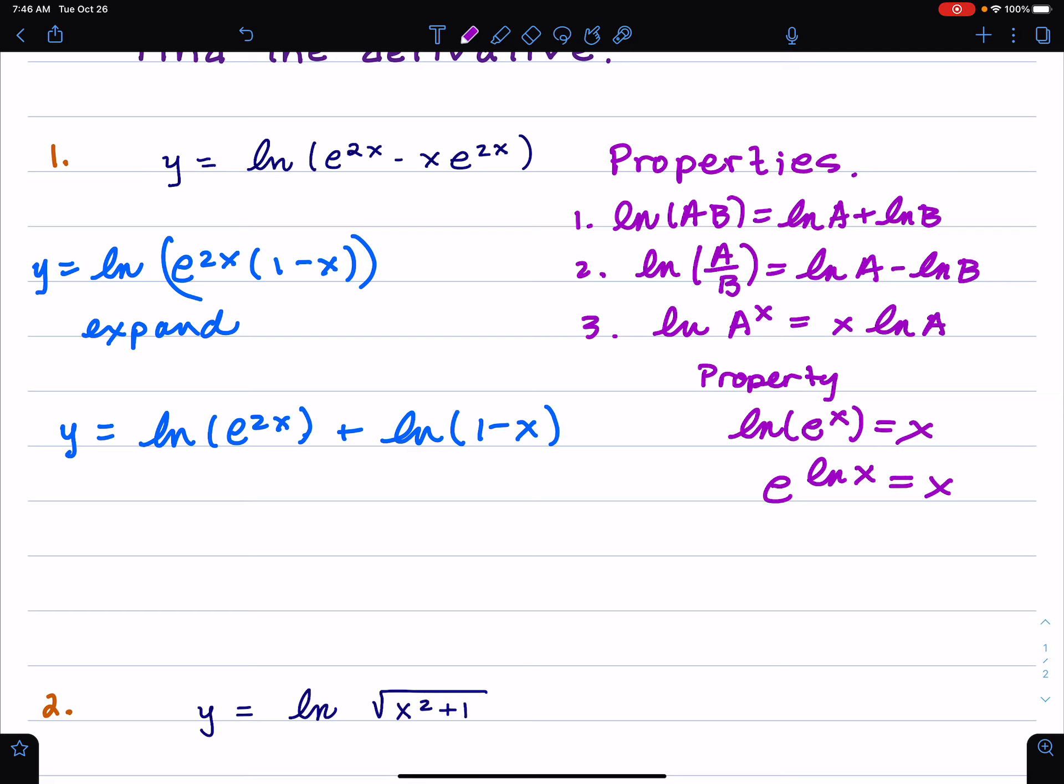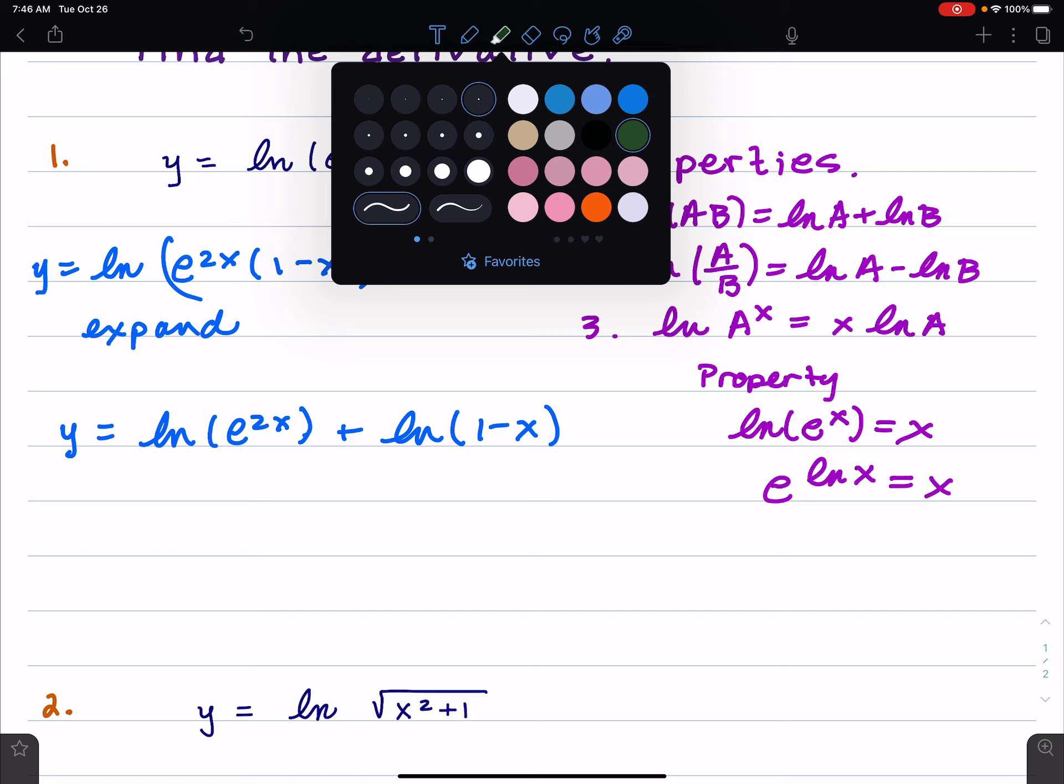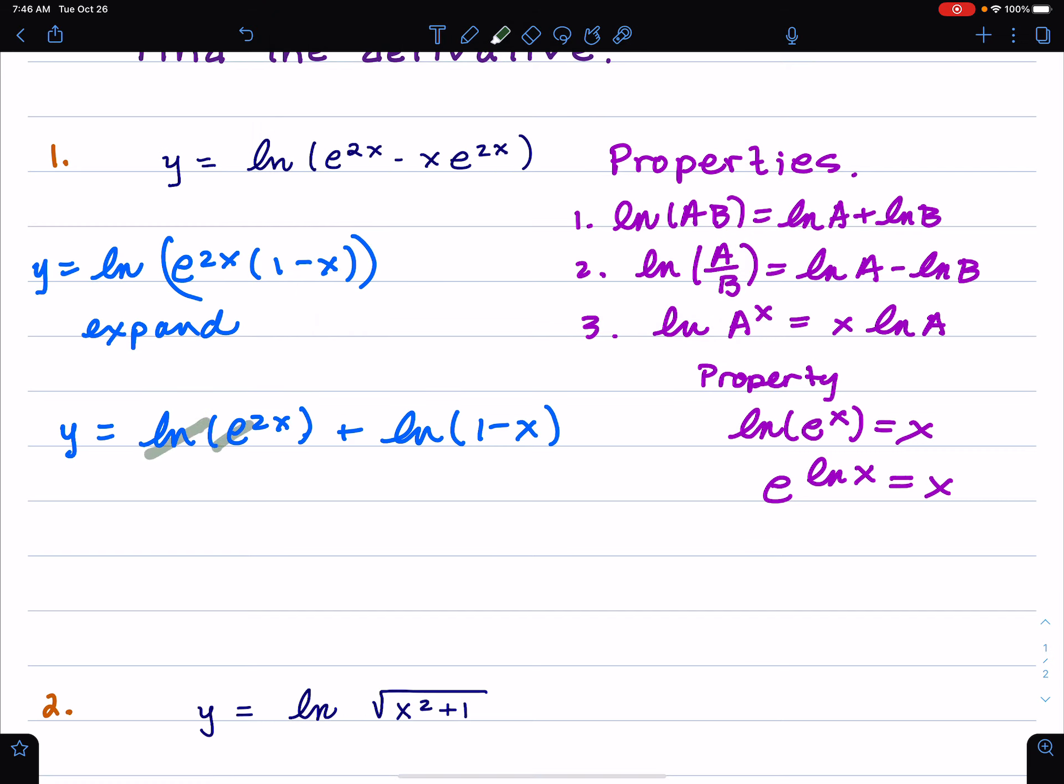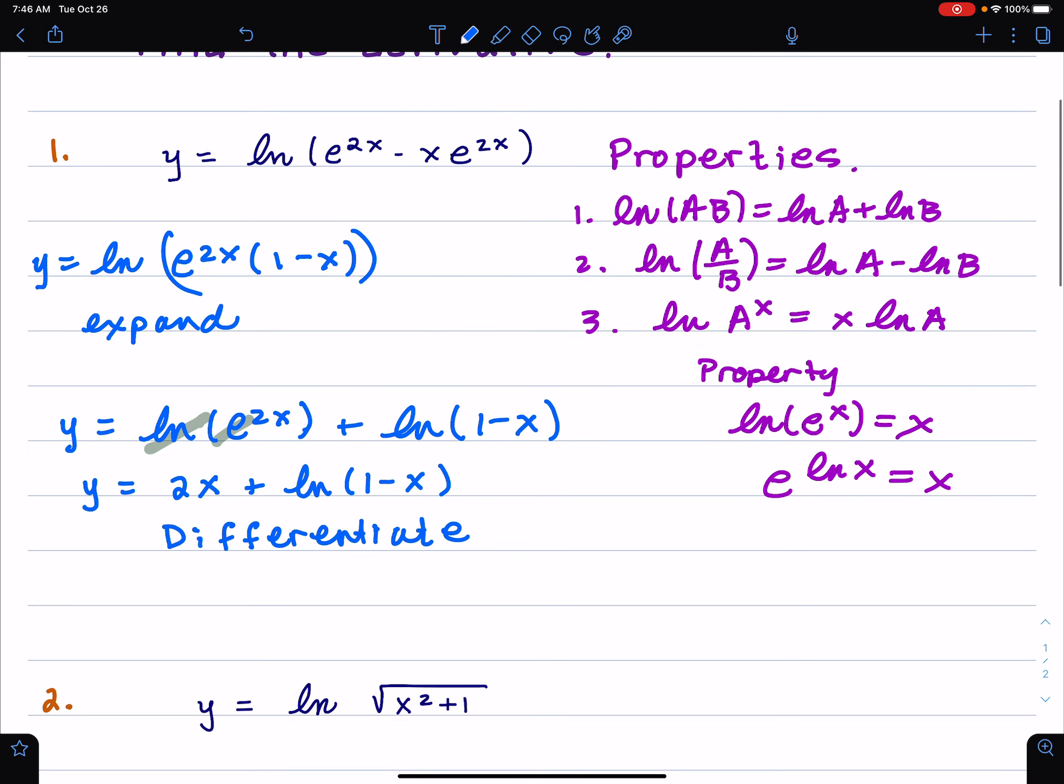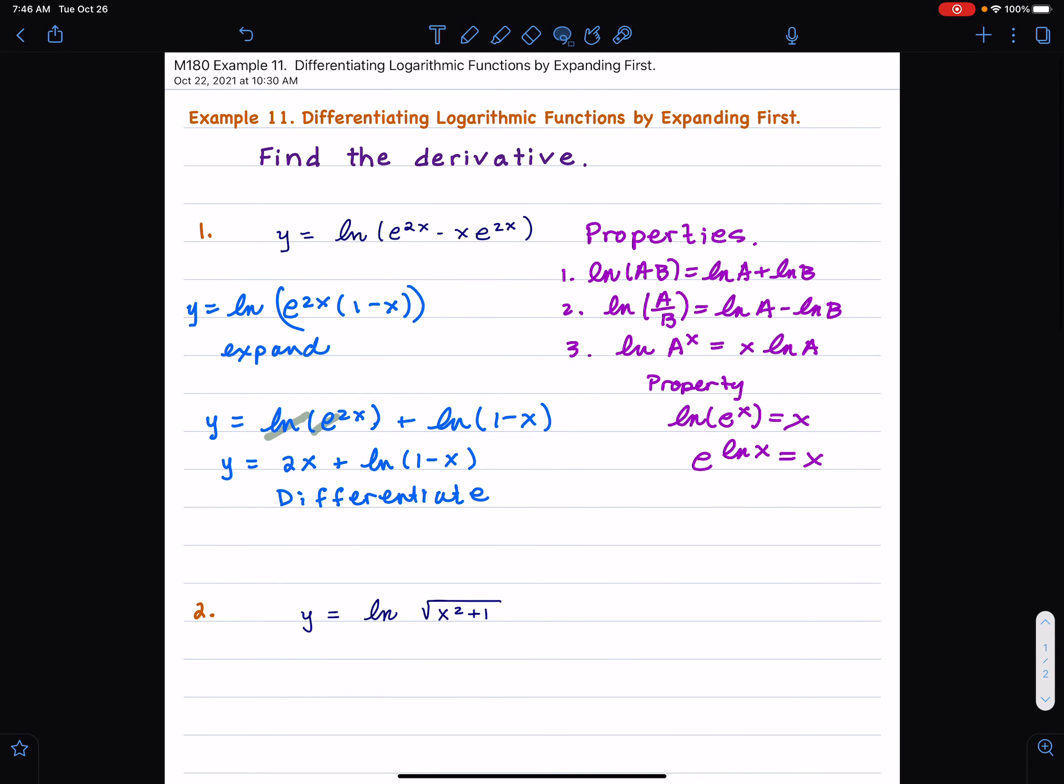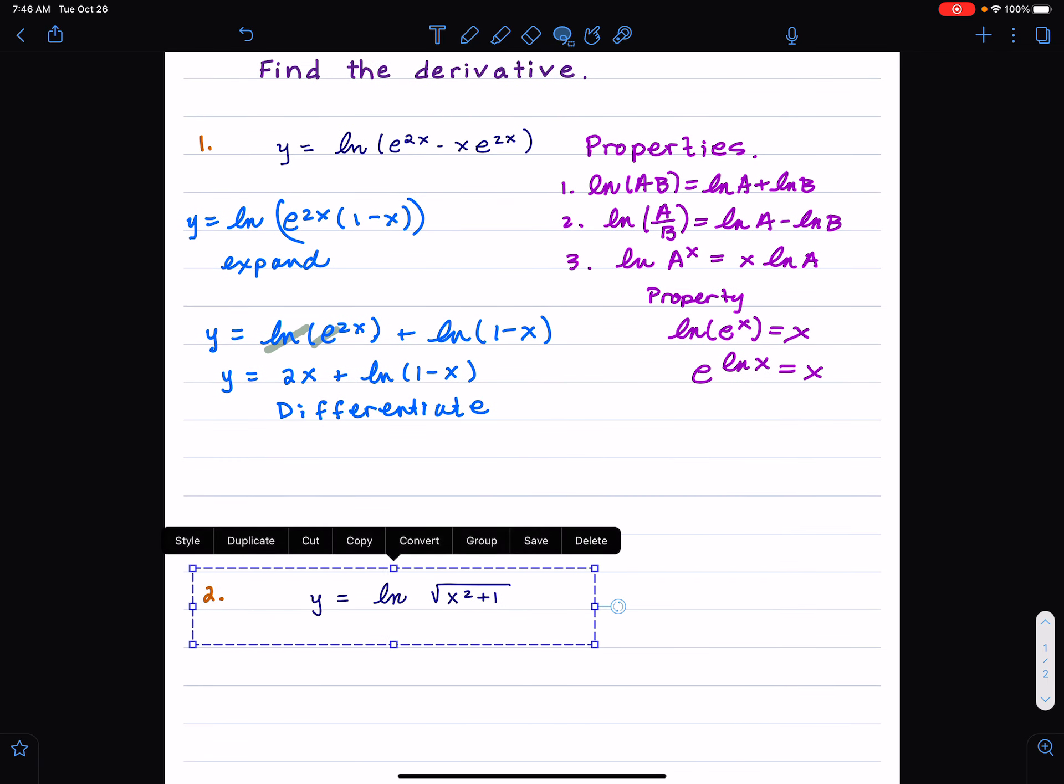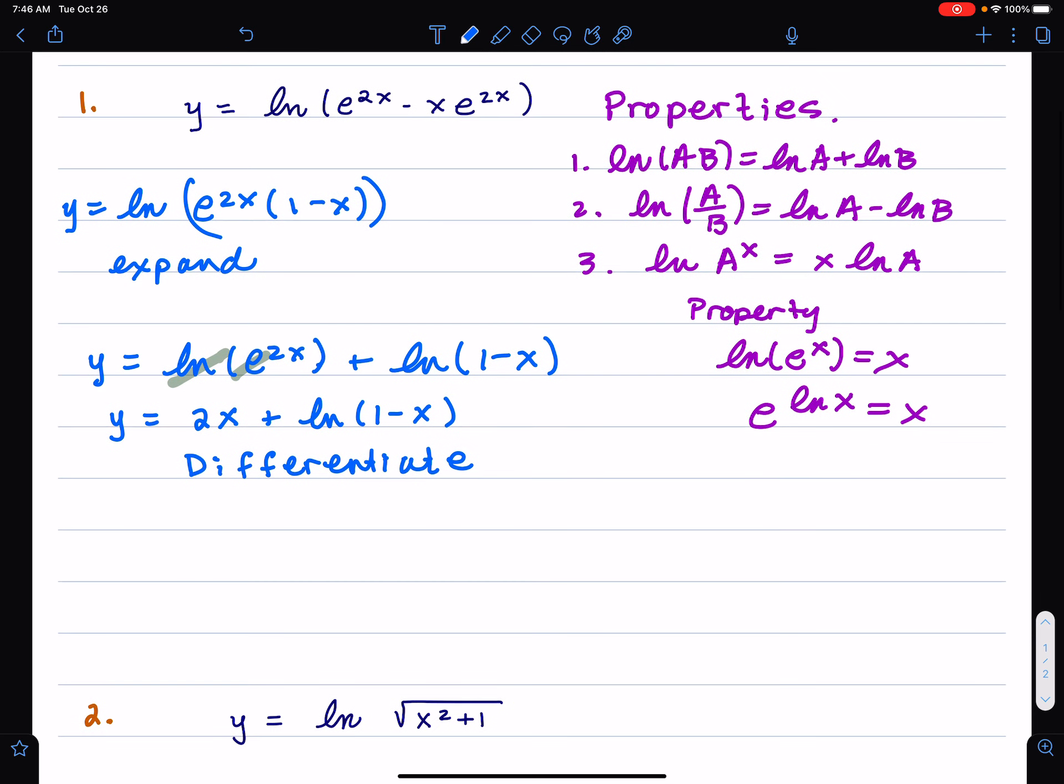So over here, then, we do get canceling. The ln and the e cancel out. So let me write then one more line here. y = 2x + ln(1-x). And so now, we can differentiate. So I didn't do the derivative. I just did a bunch of algebra there to get that. And so I just simplified it before I differentiate.